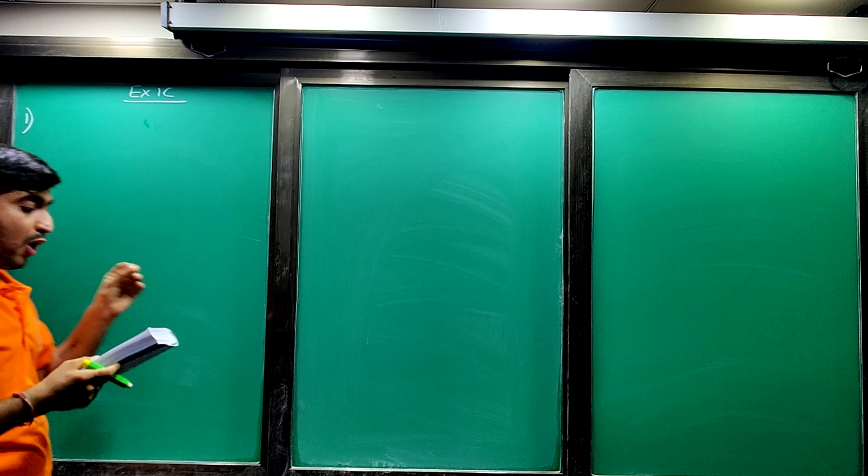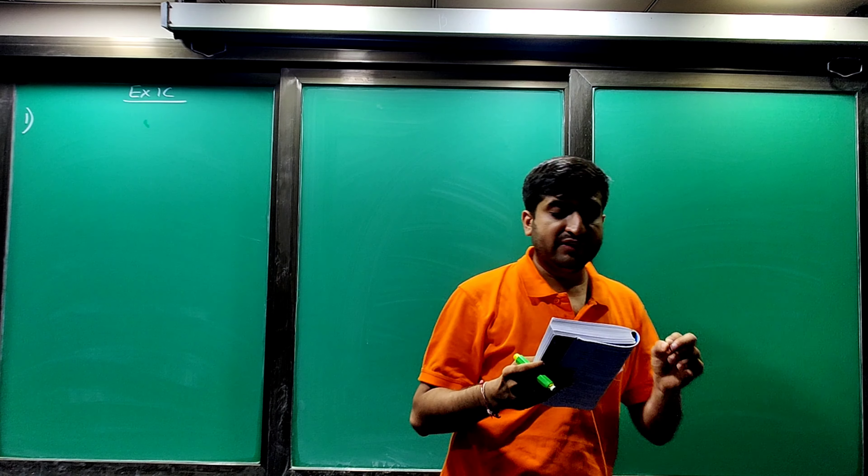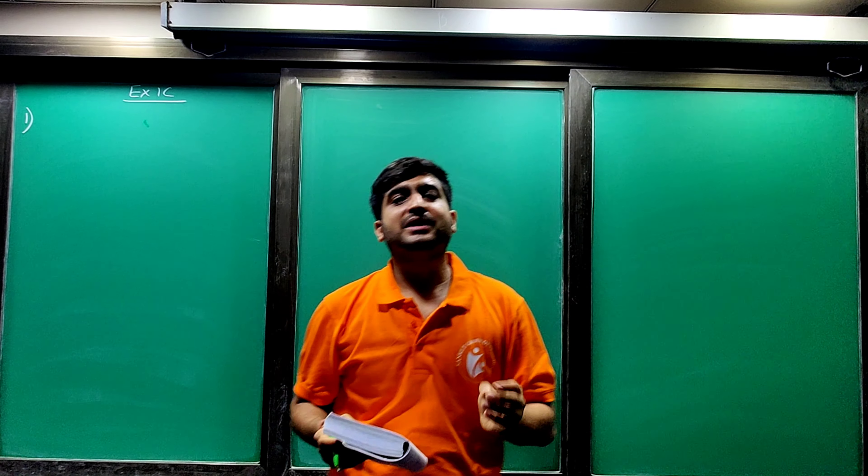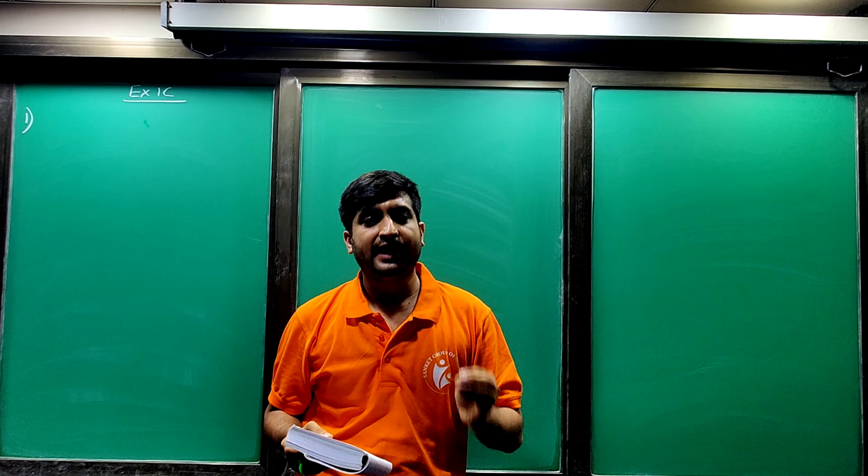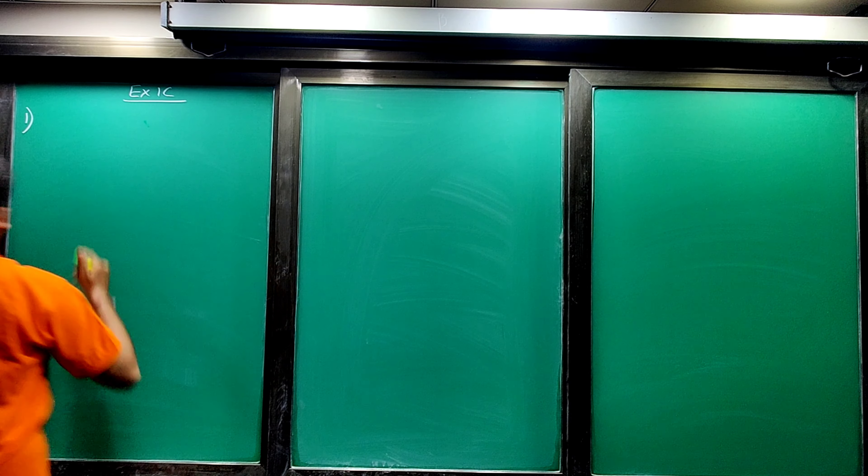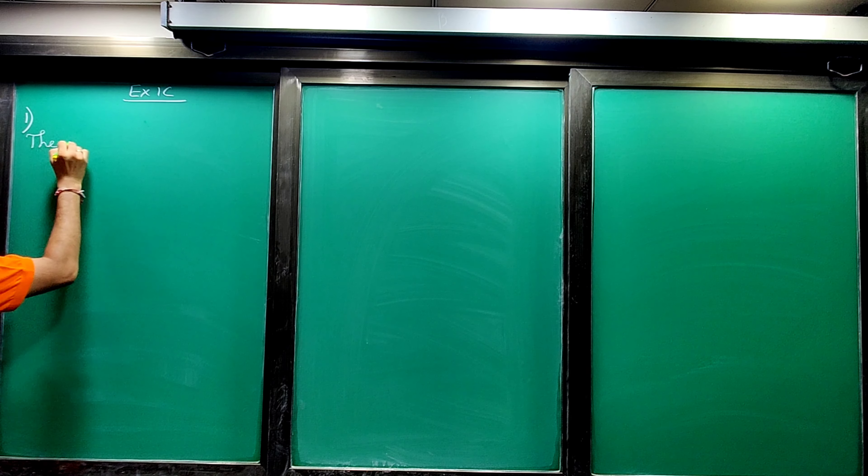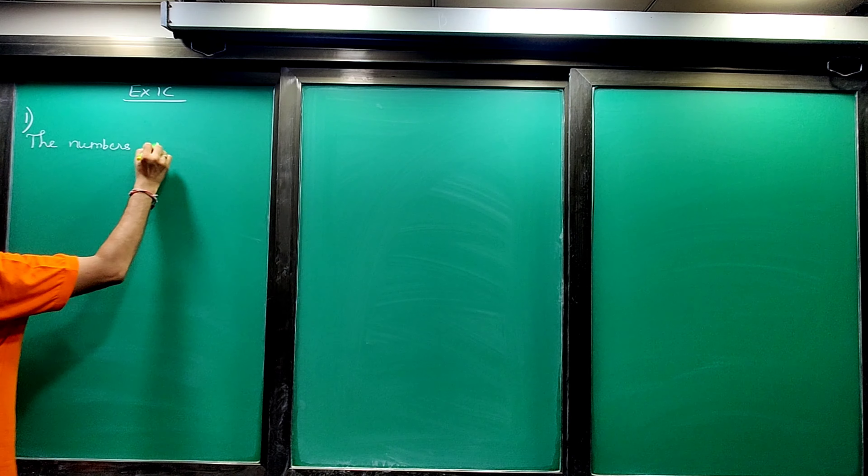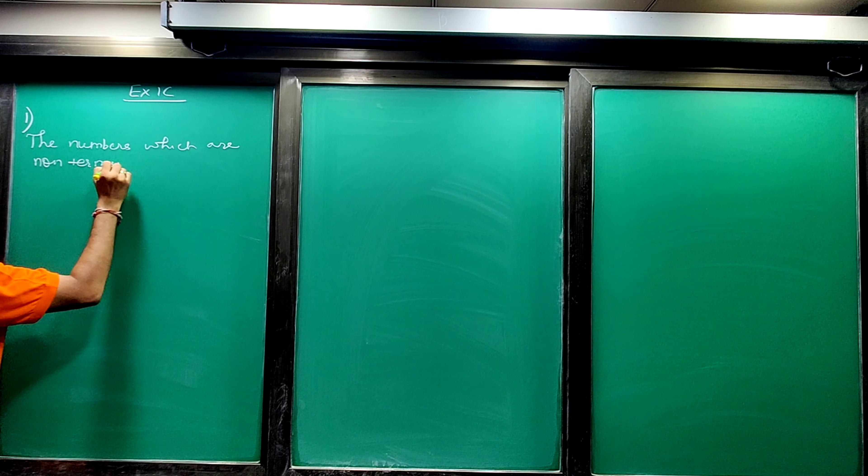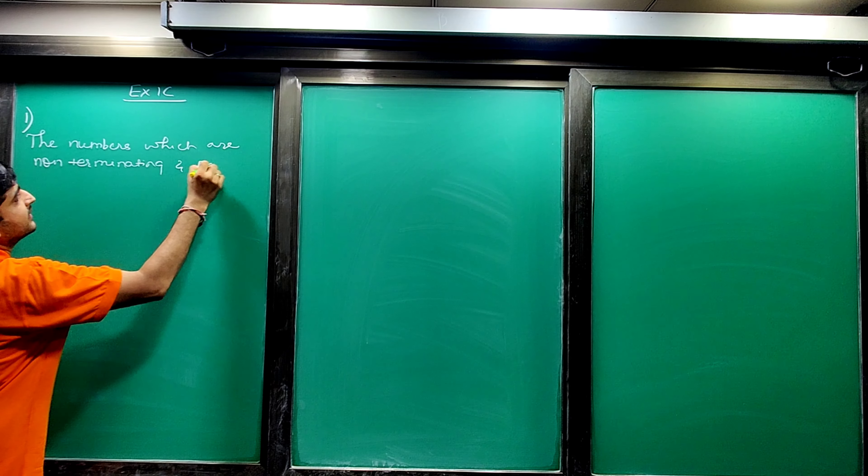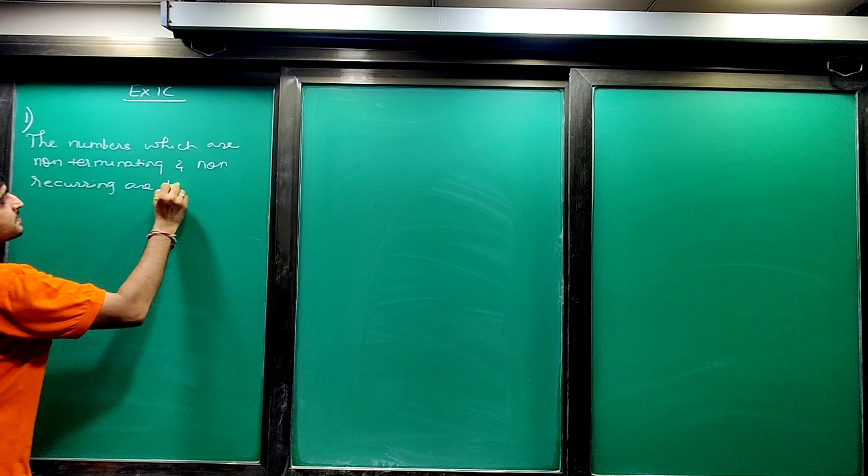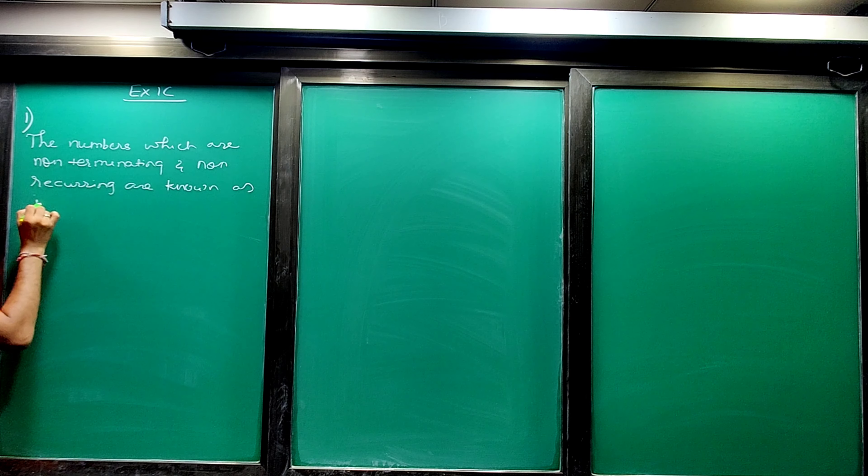First sum: what are irrational numbers, how do they differ from rational numbers, give examples. Now what do you mean by irrational numbers? Irrational numbers are those numbers which are non-terminating and non-recurring.